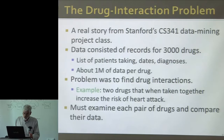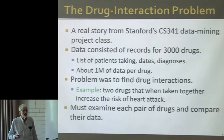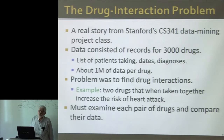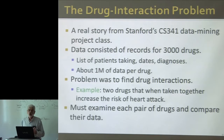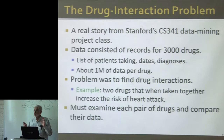The 3,000 drugs times a megabyte per drug is 3 gigabytes of data — not big data by any means, it fits in the main memory of your laptop. But look at what they had to do: look at each pair of drugs and run a chi-square test on those two one-megabyte records. There are 4.5 million pairs of drugs, so there's actually a lot of work.